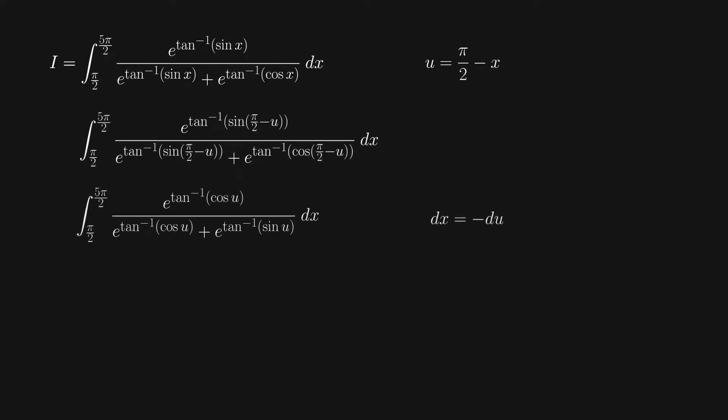Our second integral was chosen to be very similar for good reasons. We can convert between the two of them using a very simple substitution. If we're starting off with I, we'll need to turn that sine of x into a cosine of u. The easiest way to do that is to set u to π/2 minus x. With this substitution, we turn all of the sines into cosines and the cosines into sines. Remember that we'll have to multiply this by negative 1 since du is negative dx.